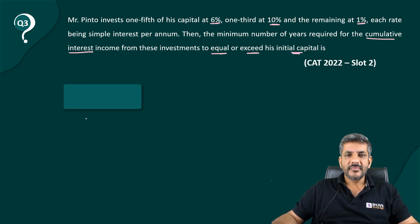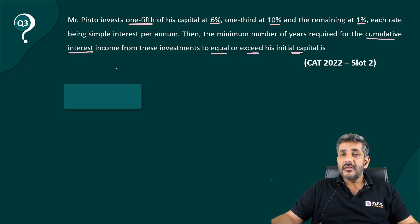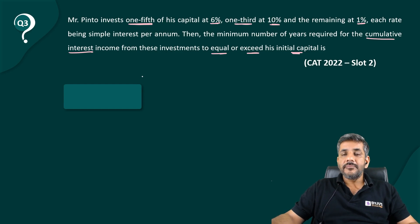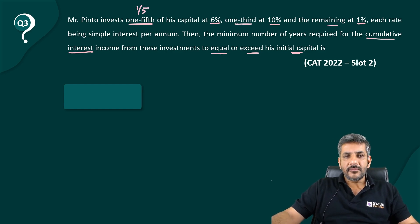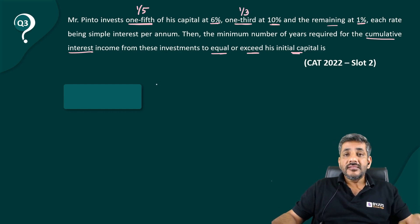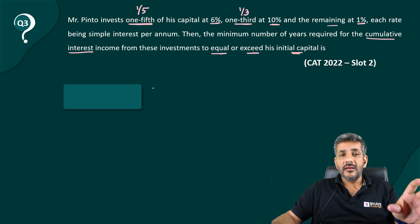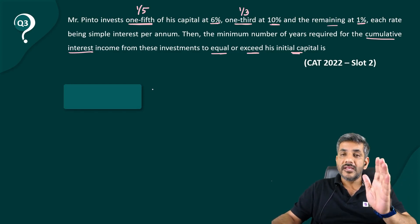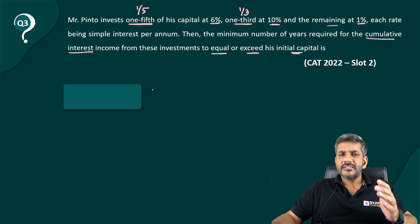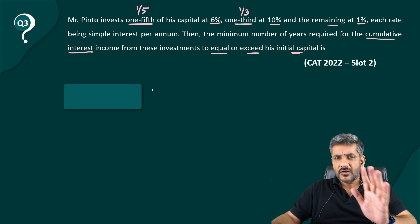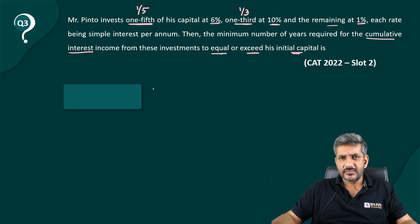He invests one-fifth of the capital at 6%, one-third at 10%, and the remaining at 1%. Since we need one-fifth and one-third, we should assume the initial capital as a multiple of both 5 and 3, which makes it easy to calculate those fractions.